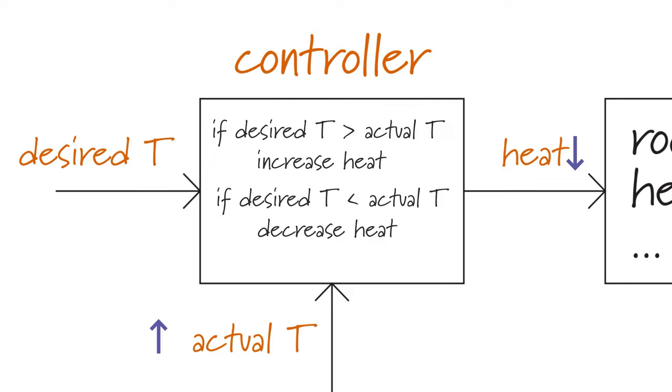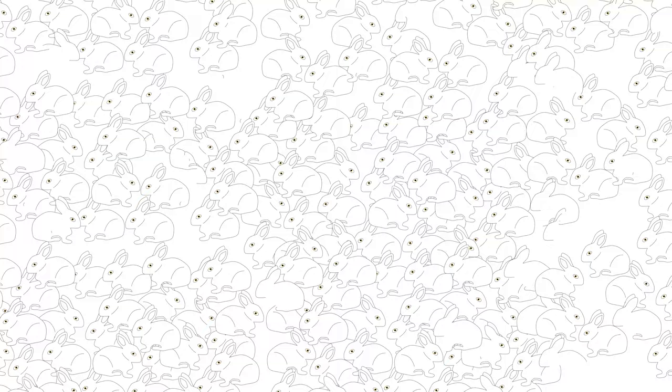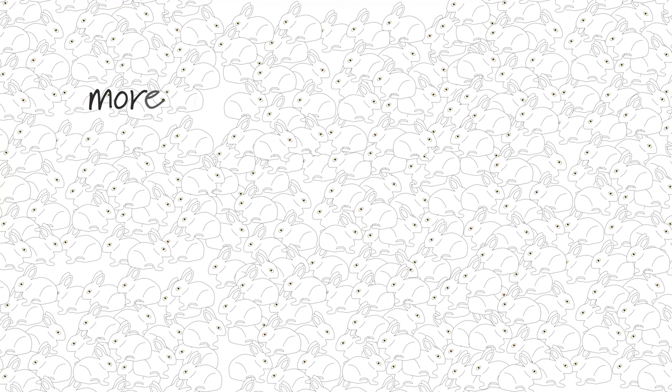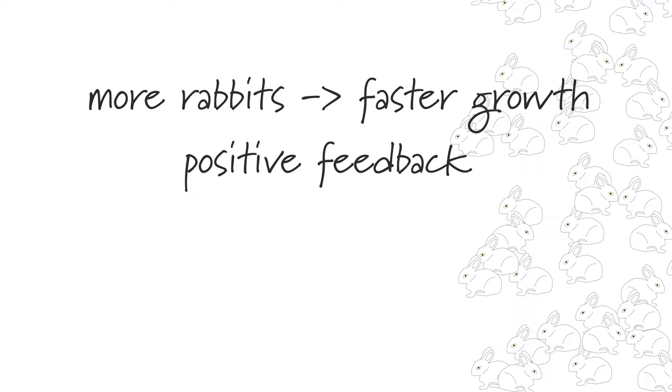Positive feedback, in contrast, tends to have a destabilizing effect on systems. One example of this is found in population dynamics. Consider rabbits with an unlimited food supply and no predators. The more rabbits there are, the faster the population grows. This is an example of positive feedback because the rate at which bunnies are produced depends proportionally on the current number of rabbits, and the system output, which is the new bunnies born, increases the current population.